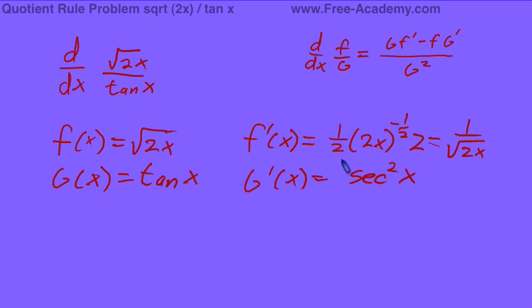Now that we have that, we can put everything into its appropriate spot of the quotient rule, and we will have our derivative. So low d high, which is g times the derivative of f of x, equals tangent of x over the square root of 2x.